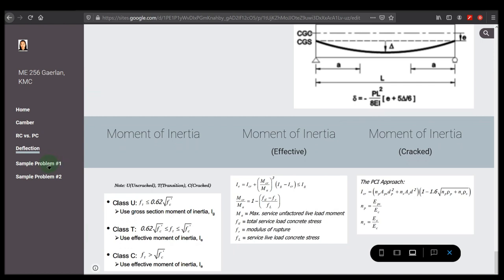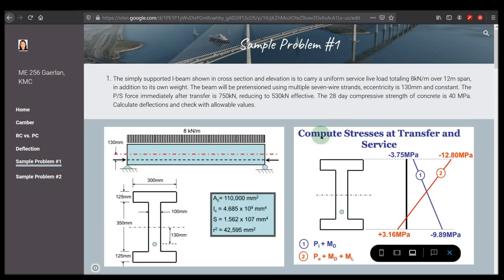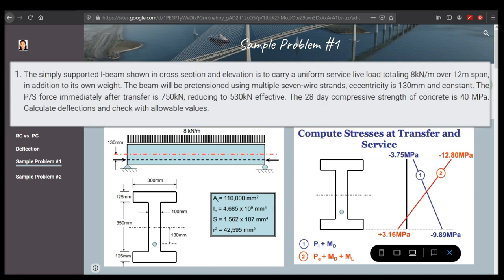I also included here two sample problems. For example one, for the first problem, it is stated here: the simply supported beam shown in construction and elevation is to carry a uniform service live load totaling 8 kN per meter over 12 meter span. In addition to its own weight, the beam will be pre-tensioned using multiple 7-wire strands. Eccentricity is 130 millimeters and constant.